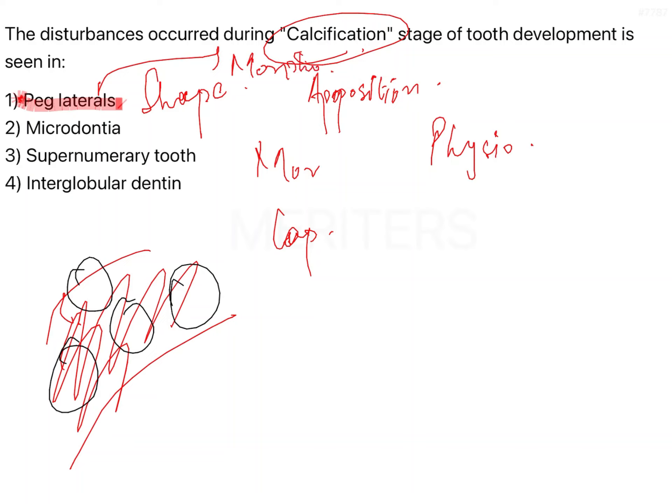Microdontia is again a disturbance in the size of the tooth. In microdontia, the tooth is calcified normally but the size of the tooth has decreased. So this will again come under the morphodifferentiation stage.